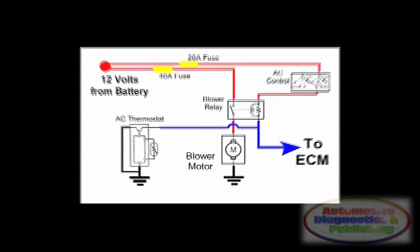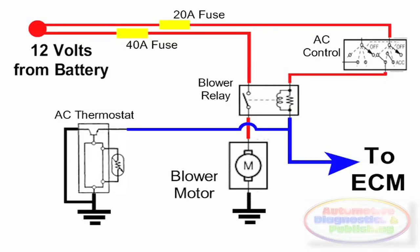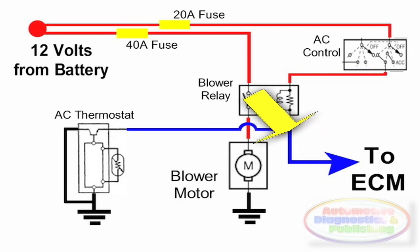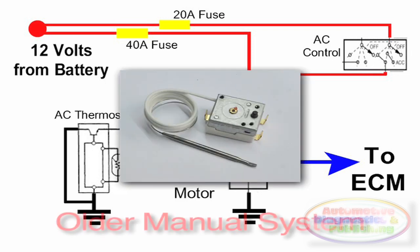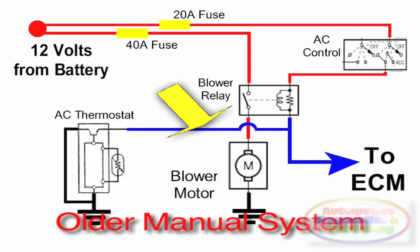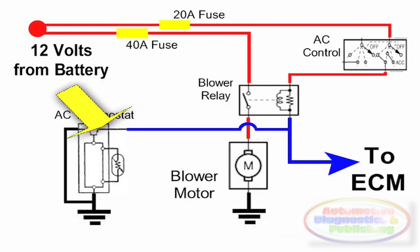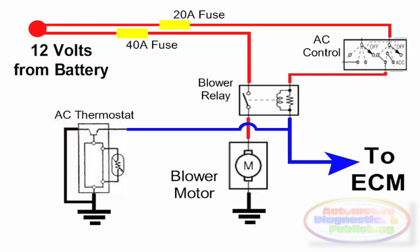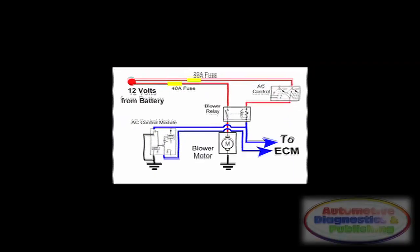Type 2 connection: the condenser fan is also turned on by a relay, but two other devices can turn it on as long as the control switch is on. In this case, the ECM and the AC thermostat — this seems to be an older system, but it's still used. The AC thermostat is now of an electronic solid-state type. This circuit arrangement puts the decision making on either the thermostat or the ECM.